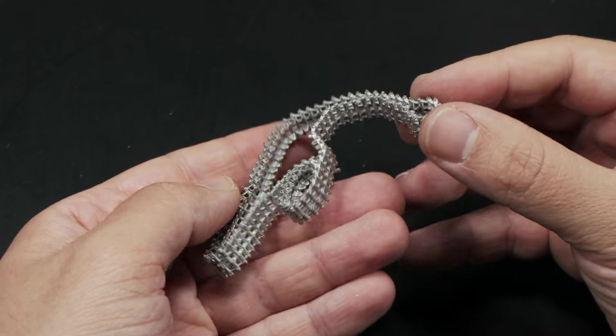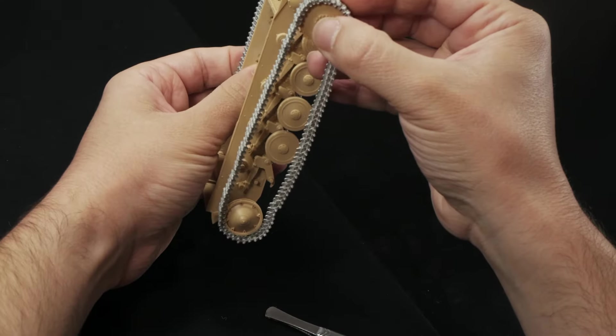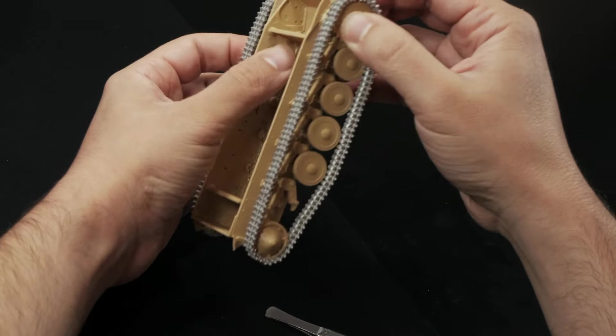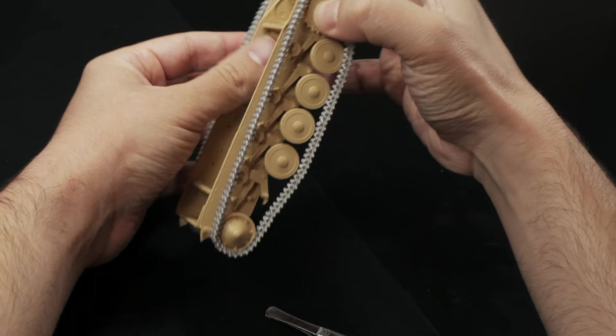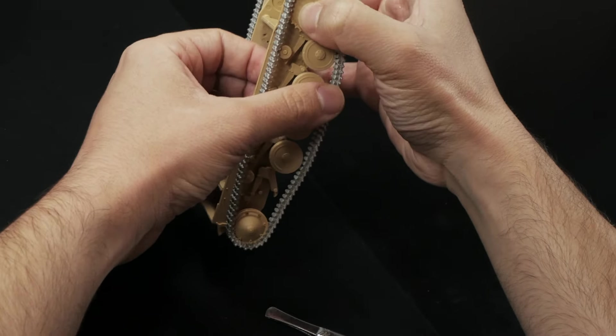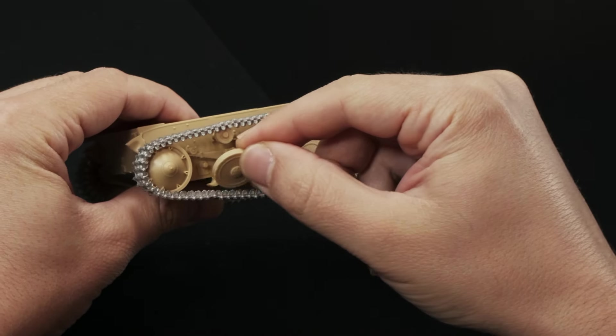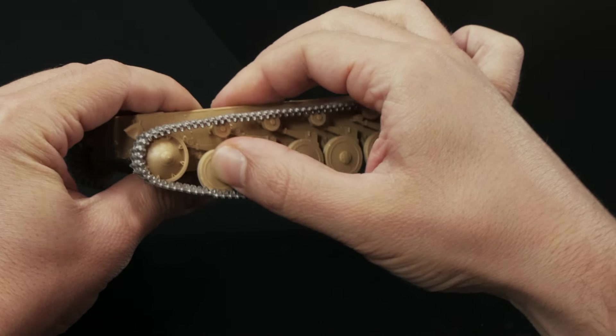My tip for placing the tracks without excessive effort is not to put one of the side wheels in place until the tracks are fitted. Later I just place the remaining wheel and I'm good to go.